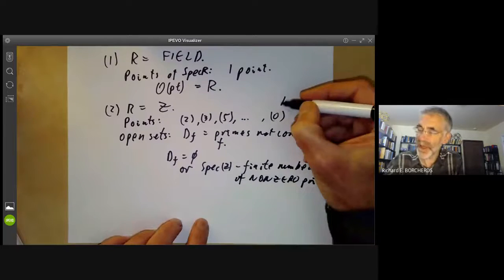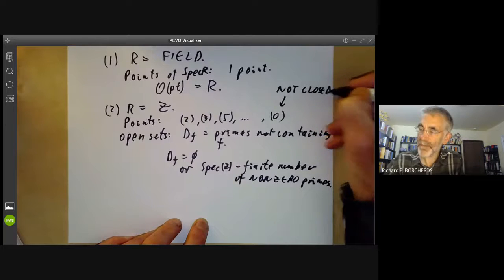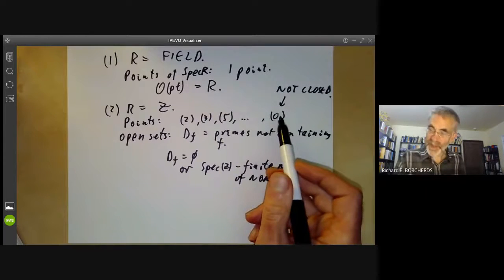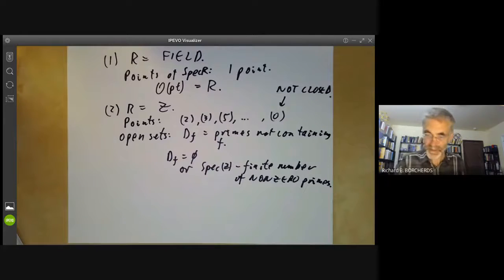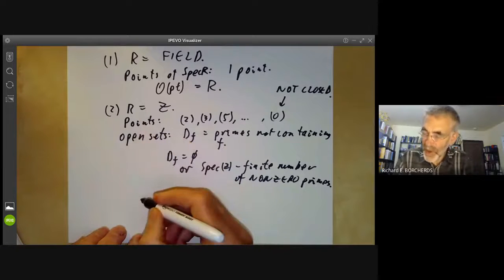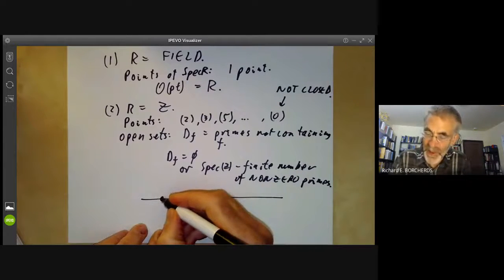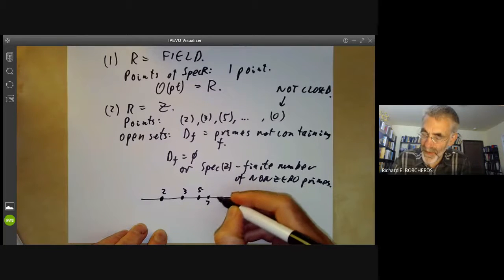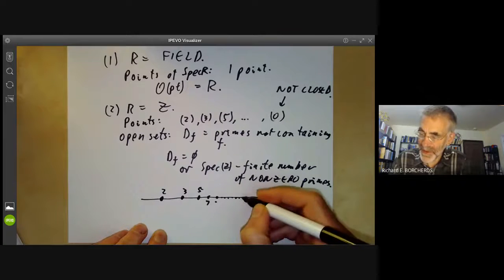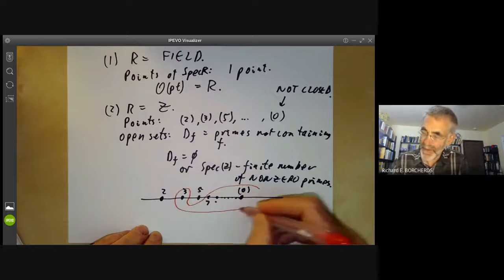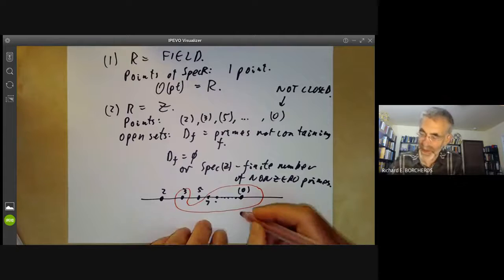This is a bit weird because you see that the zero ideal here is not a closed point. So points of the spectrum of a ring don't have to be closed. It's not only non-Hausdorff — which we already saw when looking at the Zariski topology — but points don't even need to be closed, so it's not even a T1 space. You can draw a picture of this: you picture the prime points on a line as tending to a limit, and that limit is the ideal (0). A typical open set will contain zero and all but a finite number of primes, unless it's the empty open set.